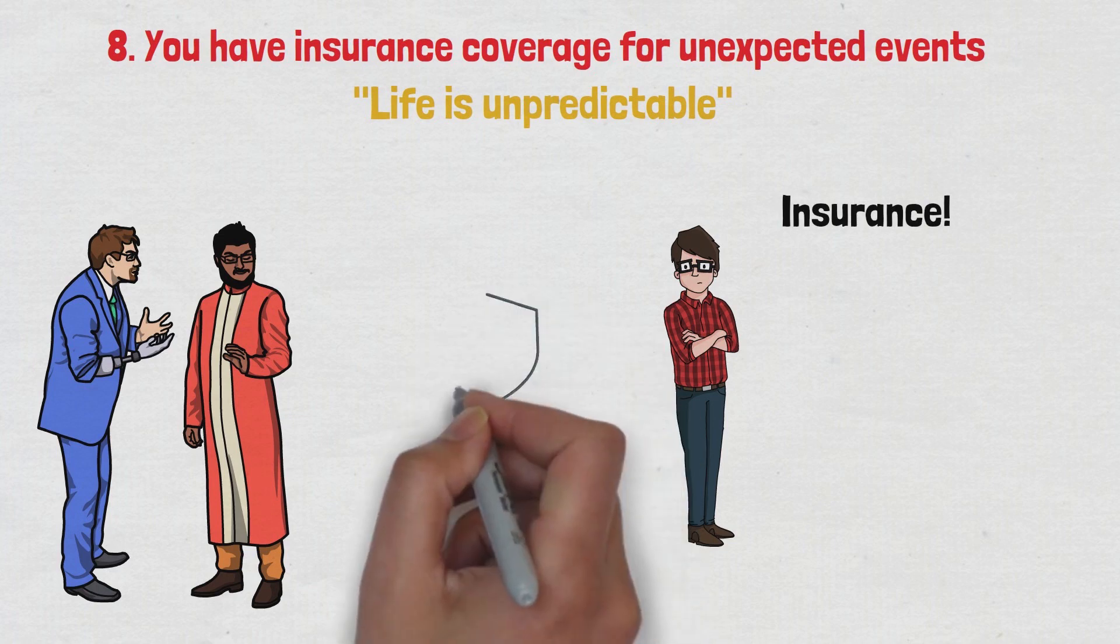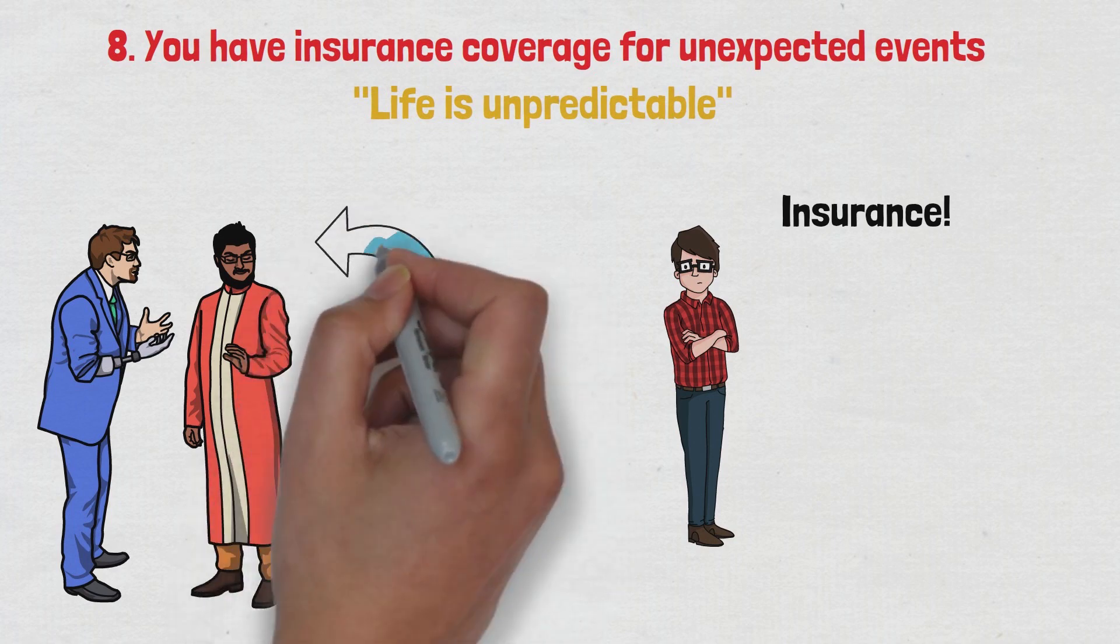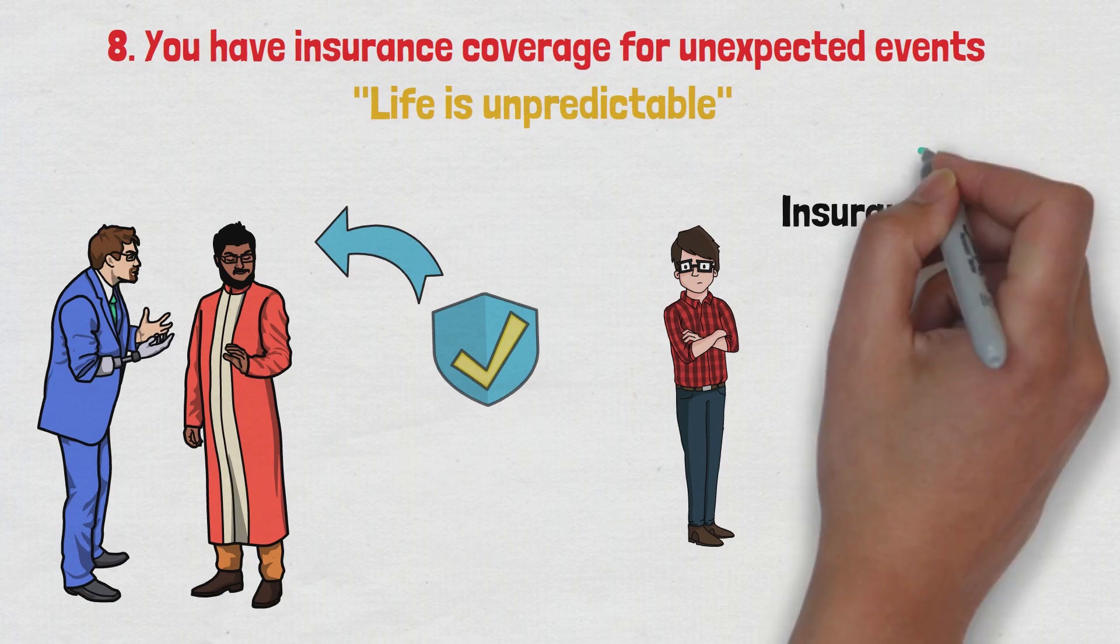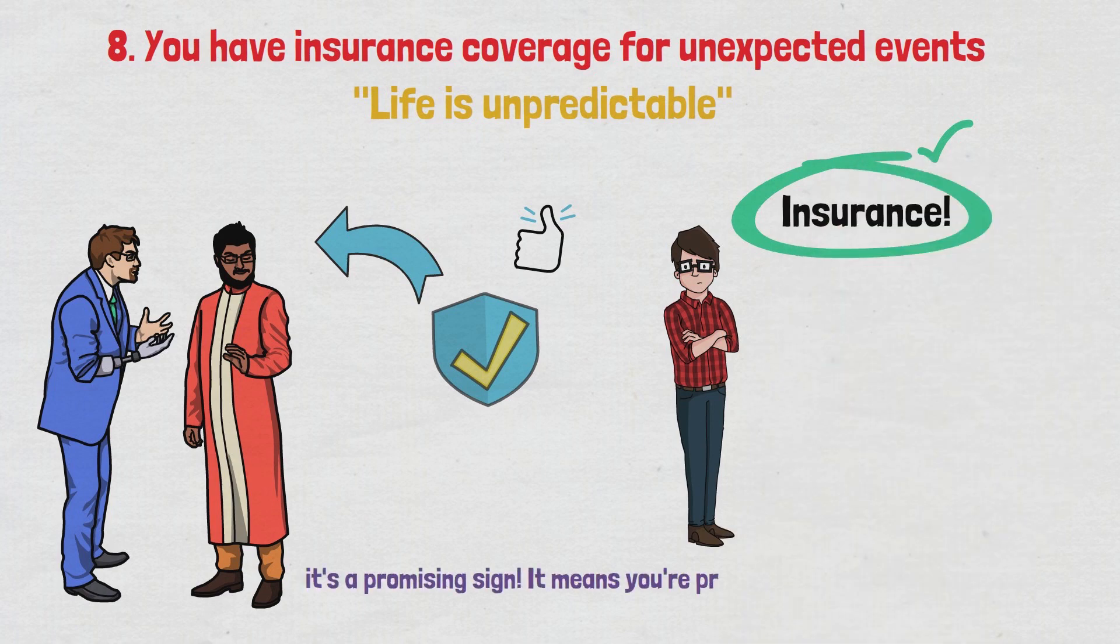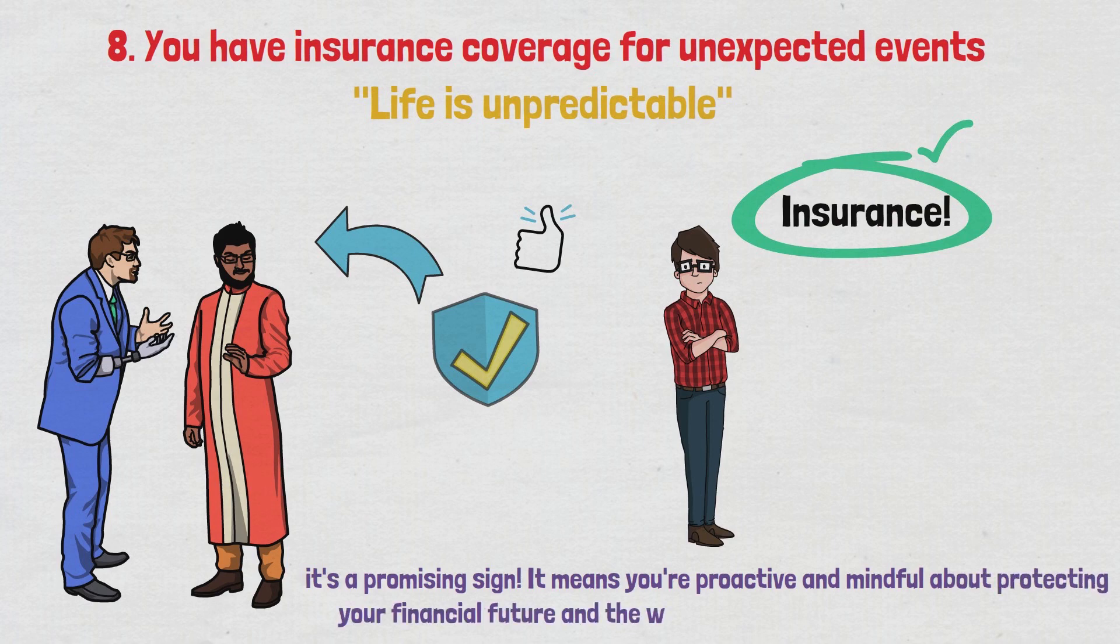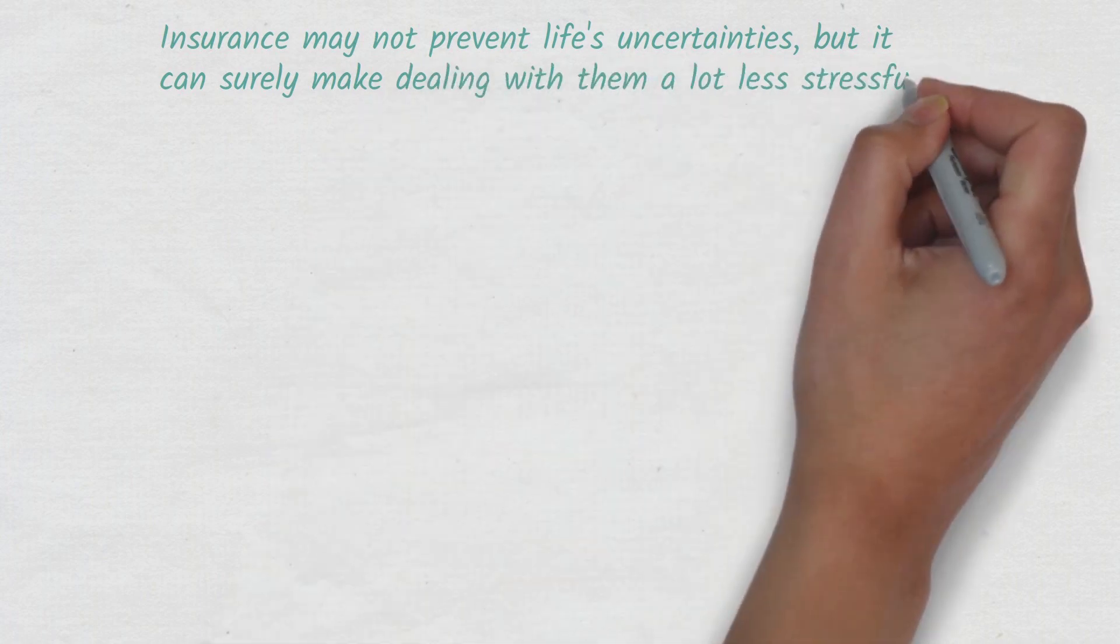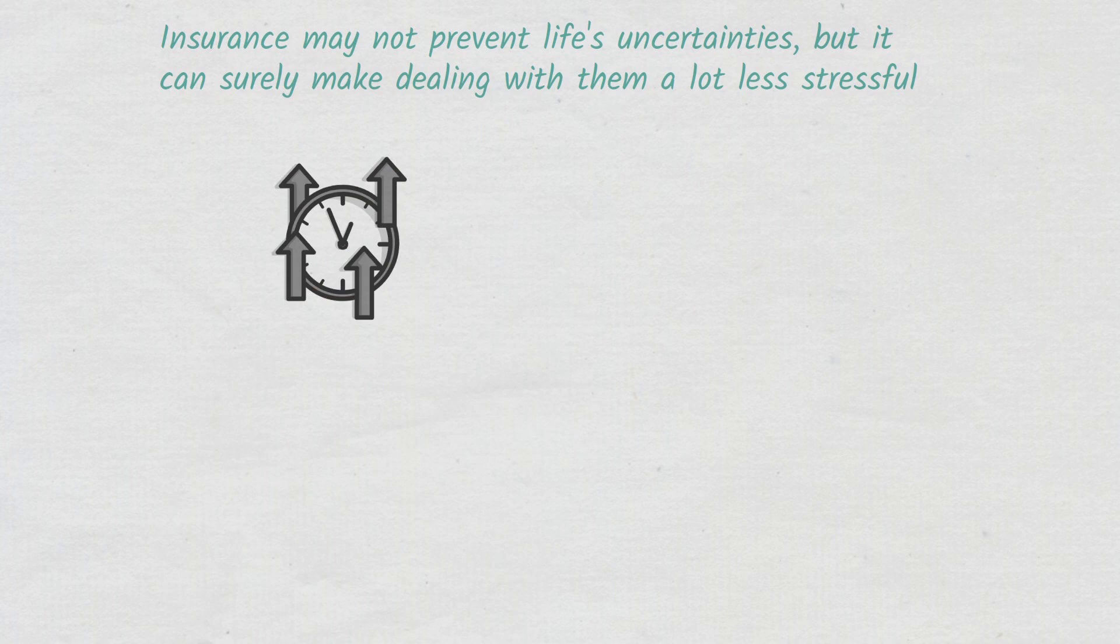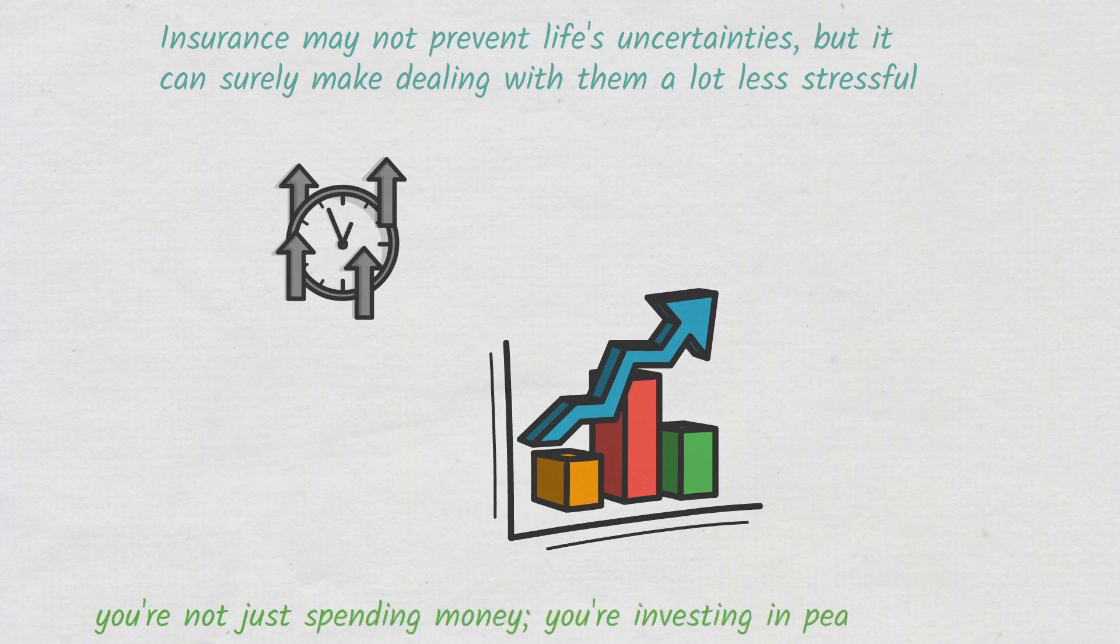Whether it's health insurance, car insurance, home insurance, or life insurance, each policy provides unique benefits to safeguard you and your family. So if you have various insurances in place, it's a promising sign. It means you're proactive and mindful about protecting your financial future and the well-being of those who depend on you. Insurance may not prevent life's uncertainties, but it can surely make dealing with them a lot less stressful. So the next time you pay your insurance premium, know that it's a clear sign you're doing well financially. After all, you're not just spending money, you're investing in peace of mind.